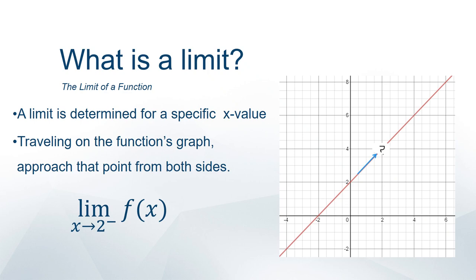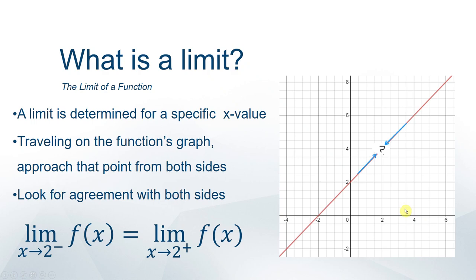That's where we get into one-sided limits. If you come at the point from the left, we put a little negative sign above the 2 to indicate a left limit. Coming from the right, we use a little plus sign. What we need is for these two one-sided limits to agree — they have to be headed towards the same point, or the overall limit will not exist.